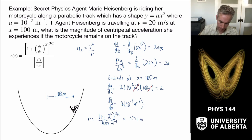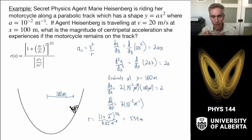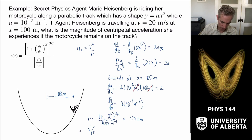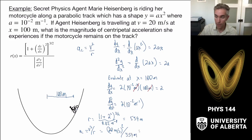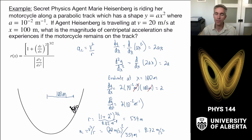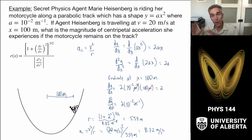We then go to the centripetal acceleration formula and use 559 meters as the equivalent circular radius at that point on the parabola. Plugging in: a_c equals v squared over r, which is 20 meters per second quantity squared over 559 meters, giving an acceleration of 0.72 meters per second squared. This is the centripetal acceleration she's experiencing. There will be other accelerations associated with gravity, but the problem only asked for the centripetal acceleration required to remain on the track. To figure out everything else, we'll need to dive into forces in the next unit.